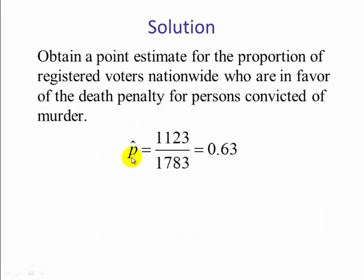So the solution: p-hat is x over n. So if we take 1,123, the number of people who are in favor and divide it by the total number, we get 0.63.